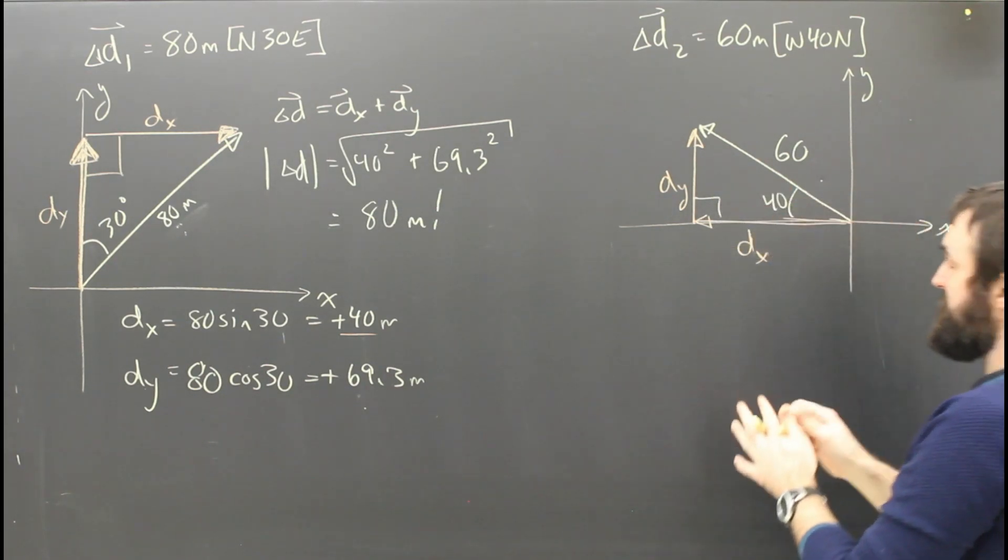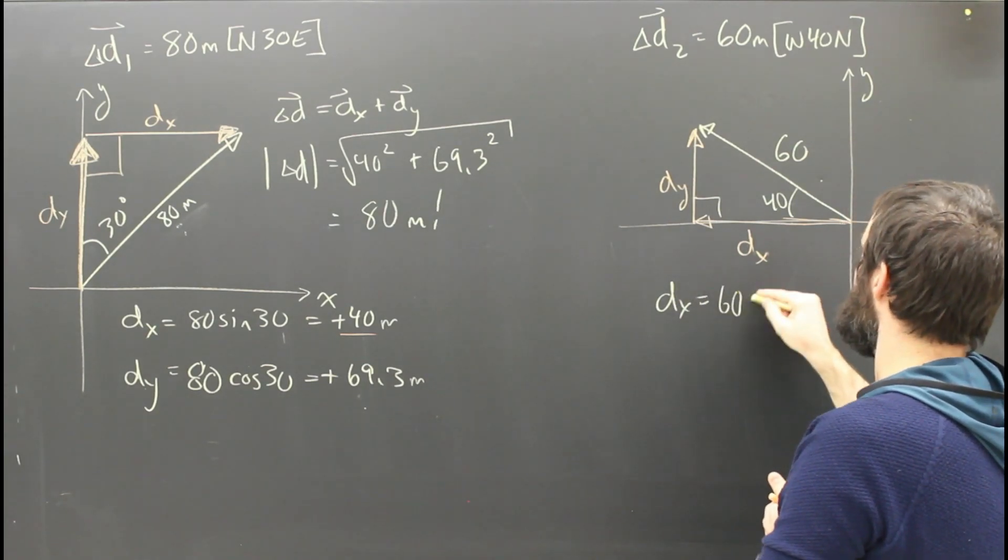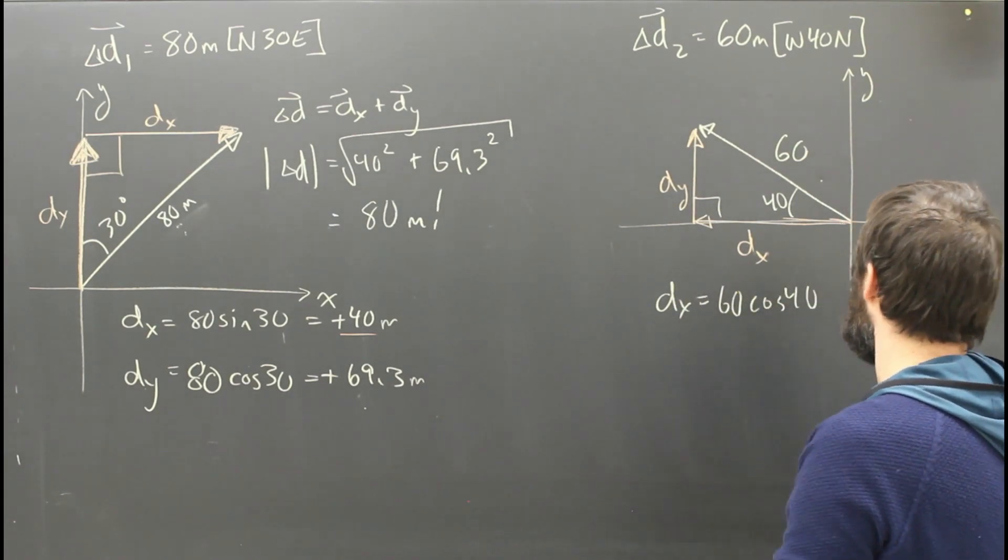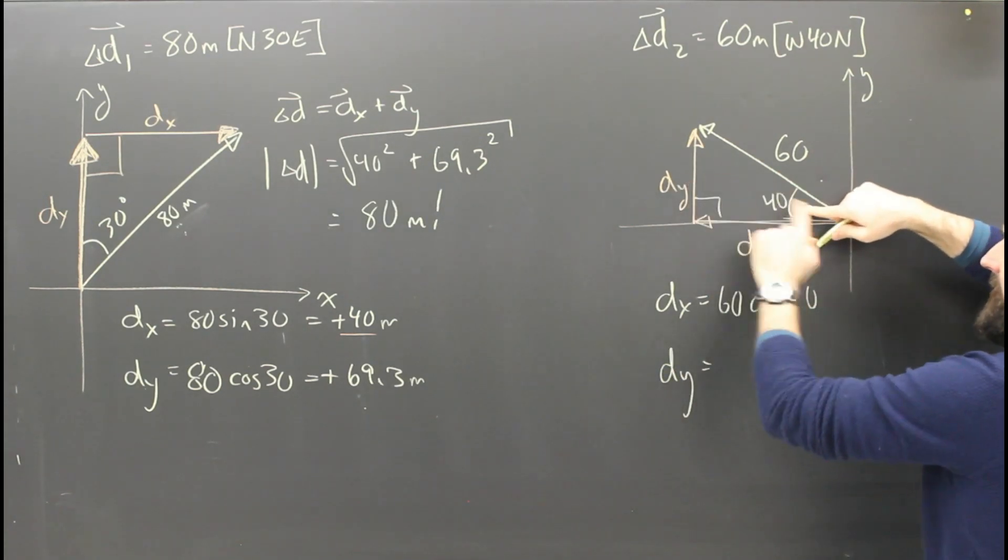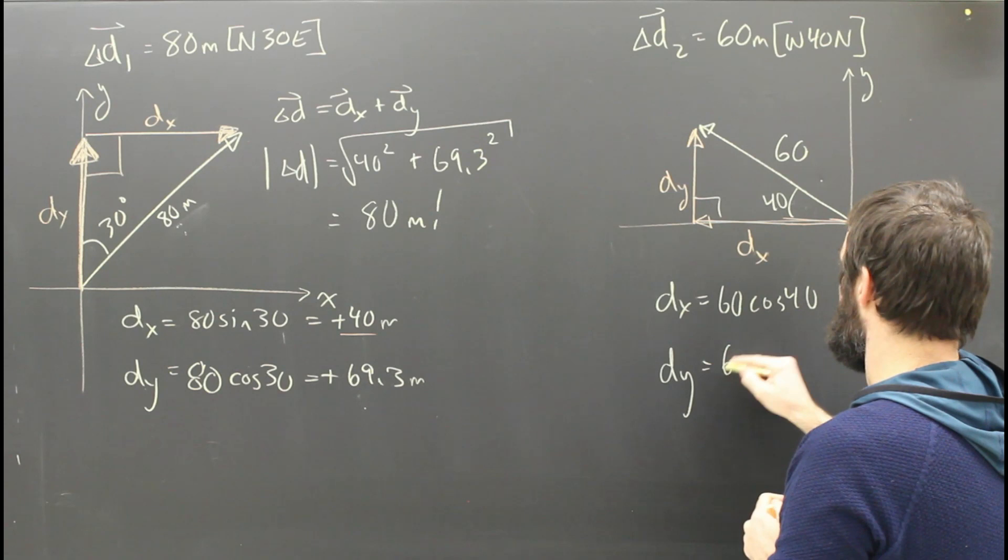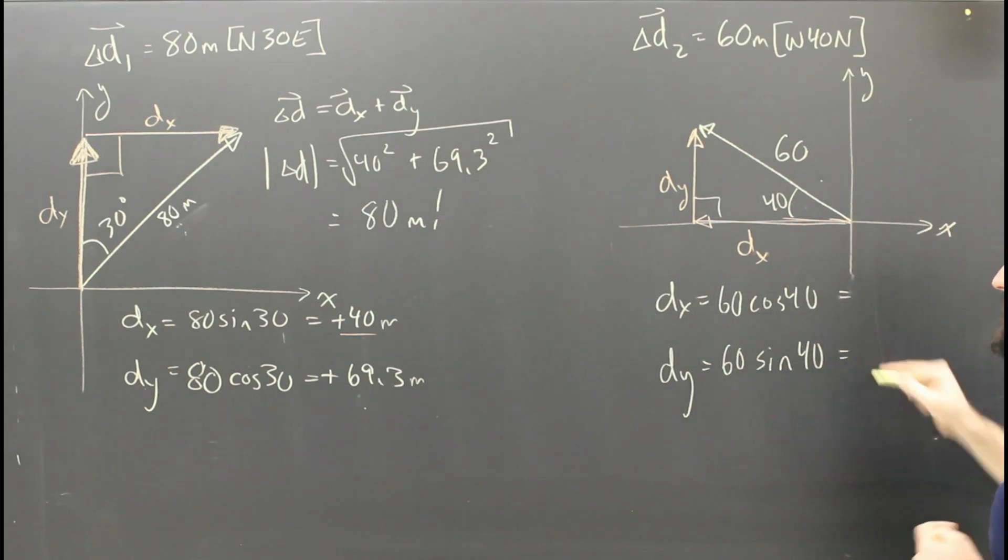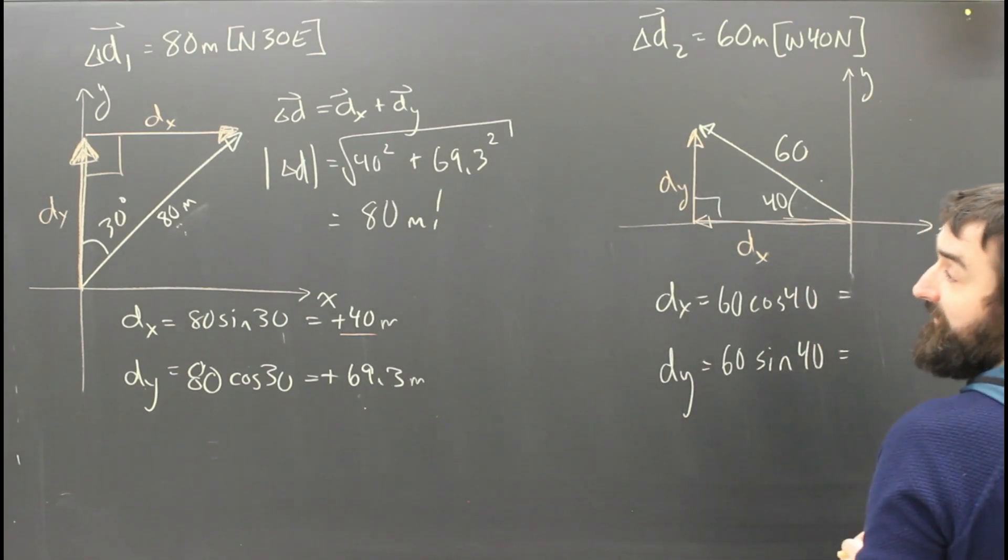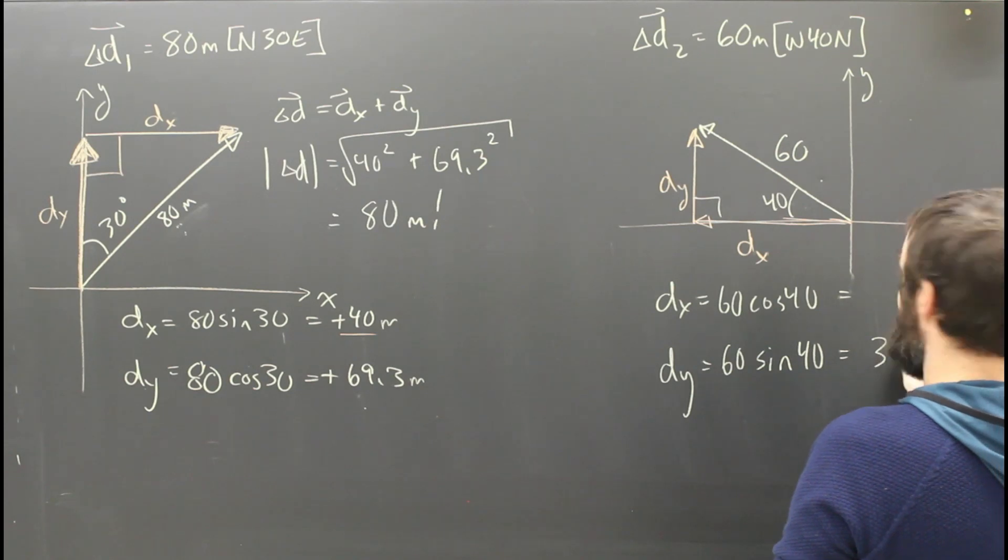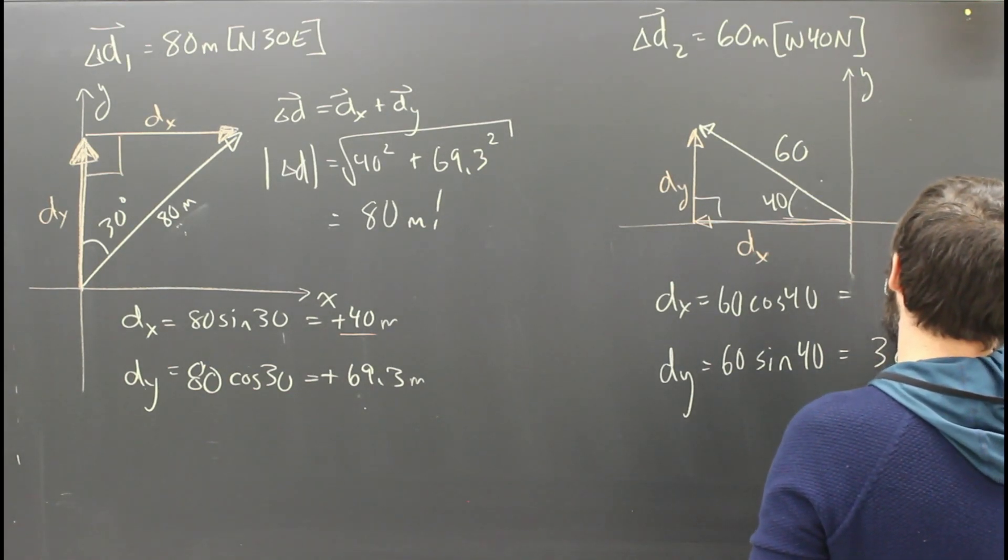40, the cosine gives me dx, so dx is going to be 60 cos 40, and dy, the opposite is sine. That gives me dy, so it's 60 sine 40. Dumping numbers into my calculator. I'm going to see that dy is 38.6 meters and that dx is 46.0.